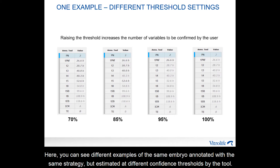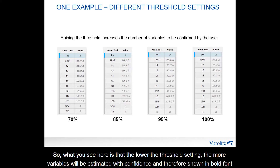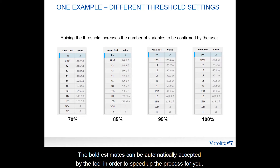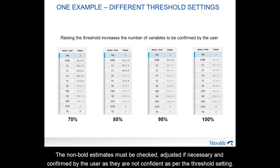Here you can see different examples of the same embryo annotated with the same strategy, but estimated at different confident thresholds by the tool. The lower the threshold setting, the more variables will be estimated with confidence and therefore shown in bold form. At a confident threshold of 100%, no estimates will be depicted in bold, since the tool has never been 100% confident of any variable because the program has never seen the actual new embryo before. Bold estimates can be automatically accepted by the tool to speed up the process. Non-bold estimates must be checked, adjusted if necessary, and confirmed by the user.